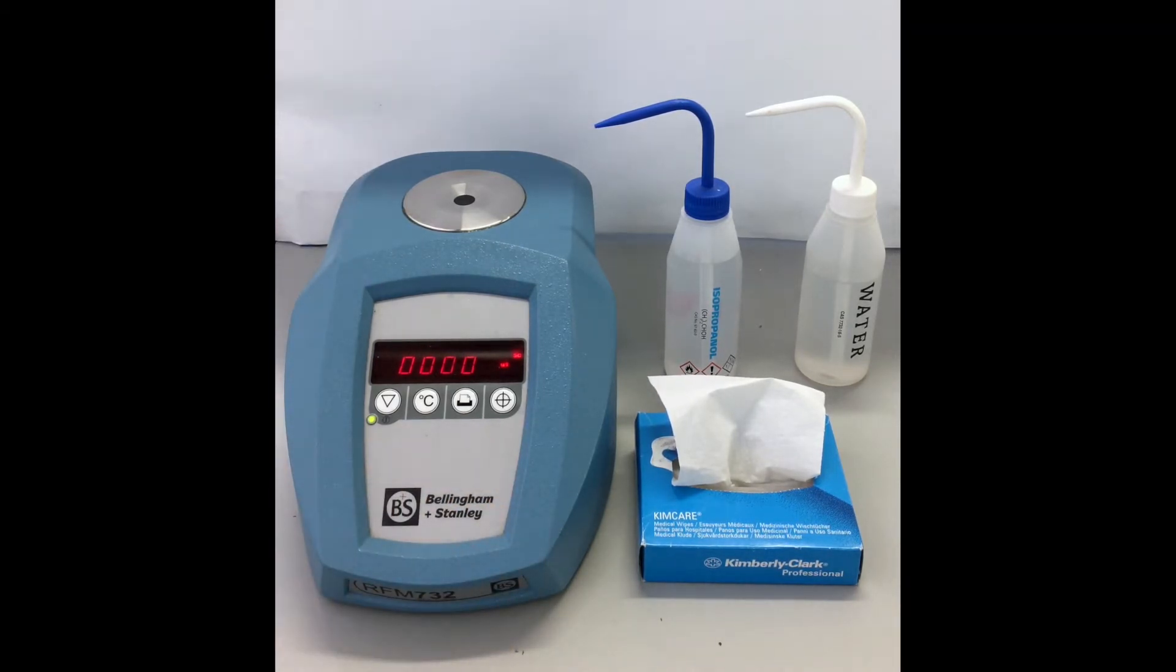The first key is the power/read key, used to switch the machine on and off and to take readings. This is the temperature key, used to display the prism temperature. And this is the print key. Press to send the reading to the linked printer.